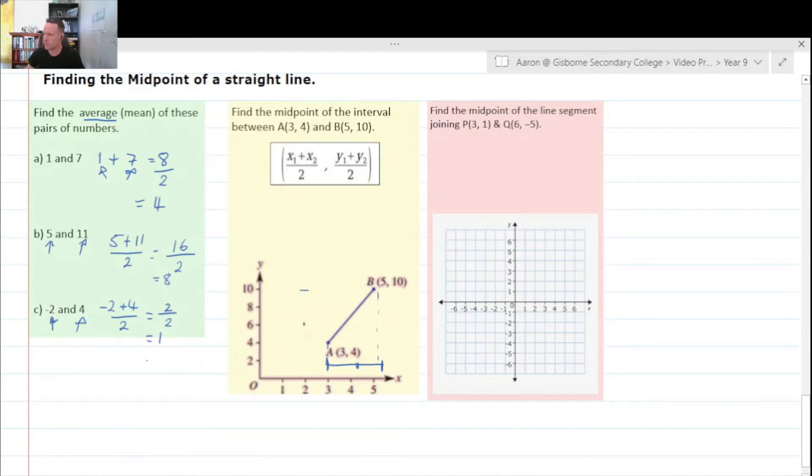So if we look at that, we're going to take the average of the x points, which is three and five, and the average of the y points, which is ten and four. Okay, so with that in mind, we're going to use this equation. Well, that's set up right there.